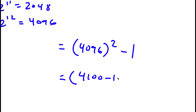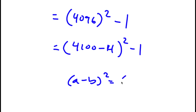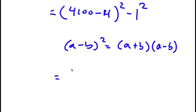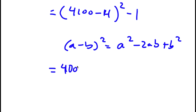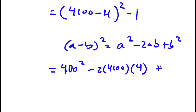Now, 4096 is the same thing as 4100 minus 4, so I have this squared minus 1. And if I have something in the form a minus b squared, this is actually equal to a squared minus 2ab plus b squared. So we have 4100 minus 4 squared, which is going to equal 4100 squared minus 2 times 4100 times 4, plus 4 squared.